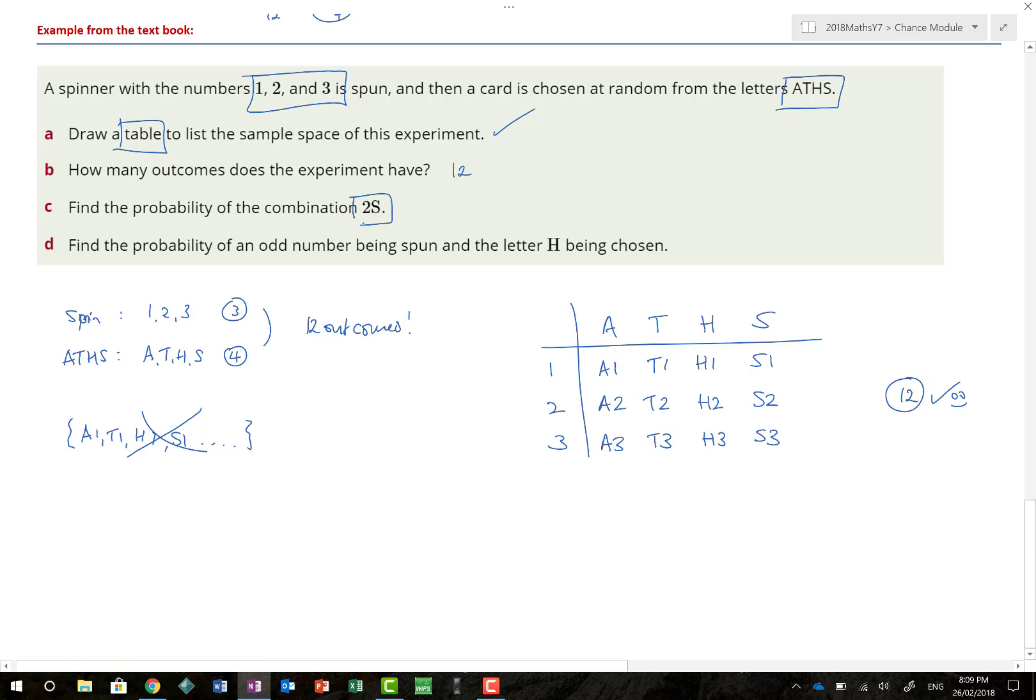Find the probability of getting the combination 2S. Now, again, remember, order isn't important. So 2S is exactly the same as S2. How many of these tables have S2 in them? Well, there's only 1. Out of a total of 12 outcomes, and there is my answer. Find the probability of an odd number being spun, and the letter H. So we're looking for the letter H, and an odd number. Well, there is an odd number, and there is an odd number. How many did I choose? I chose 2 out of 12, which, when we cancel it down, gives us 1 out of 6.